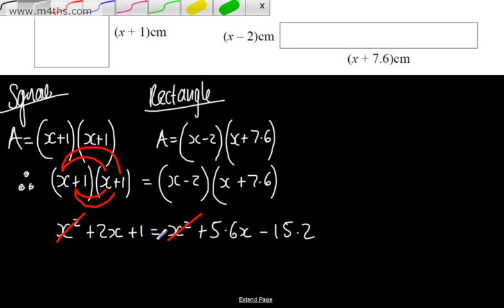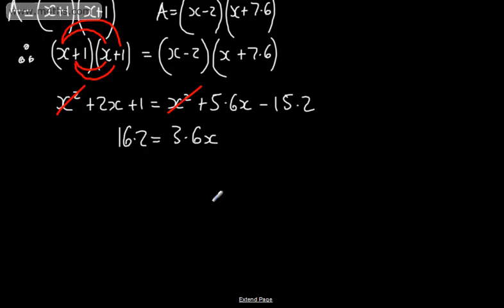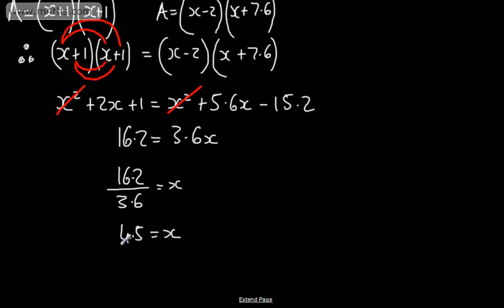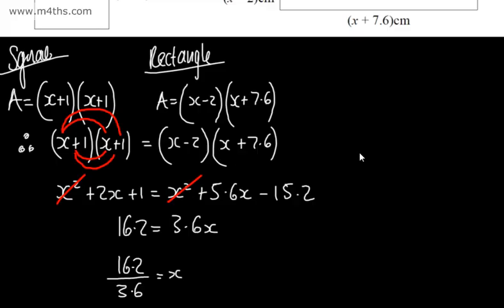I'm going to add 15.2 to both sides and subtract 2x. On the left-hand side, 16.2 is going to be equal to 3.6x. So we can say that 16.2 divided by 3.6 gives us x, which is 4.5. Let's check that on the calculator: 16.2 divided by 3.6 gives 9 over 2, or 4.5. So we've solved for x.